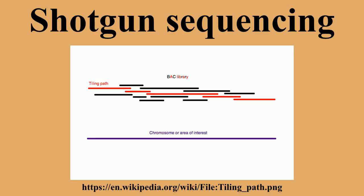The chain termination method of DNA sequencing can only be used for fairly short strands of 100 to 1000 base pairs. Longer sequences are subdivided into smaller fragments that can be sequenced separately, and subsequently they are reassembled to give the overall sequence.